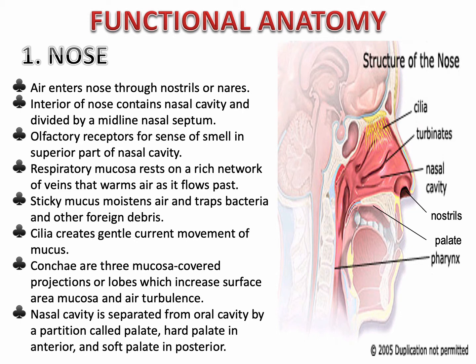The concae, or turbinates, are three mucosa-covered projections which increase surface area and air turbulence. The nasal cavity is separated from the oral cavity by a partition called the palate — we have the hard palate in the anterior part and the soft palate in the posterior part. If you move your tongue and touch the upper part of your oral cavity, you will feel the hard and soft palate.